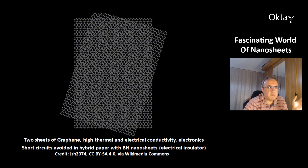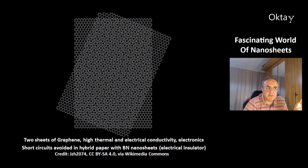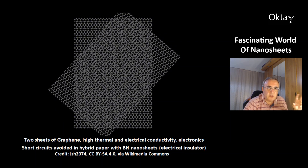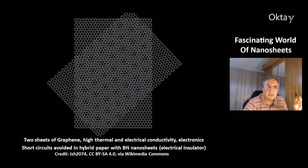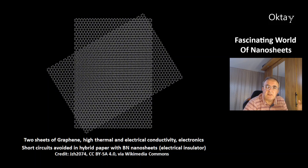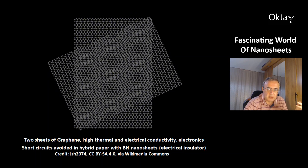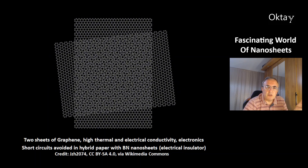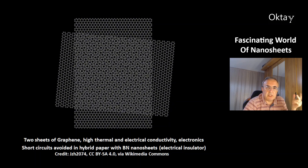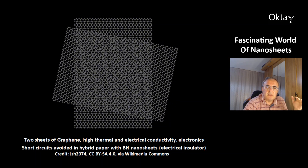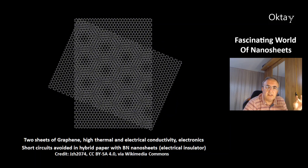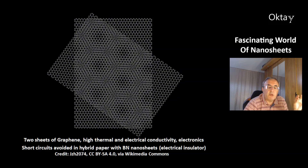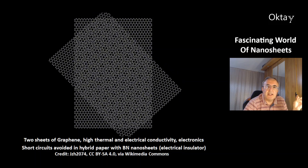This is an animation of two sheets of graphene. Graphene is known for its high thermal and electrical conductivity, which is why it is very interesting for electronics. However, there is a danger of short circuits, and this is prevented by making hybrid papers with boron nitride nanosheets. Boron nitride is an electrical insulator.